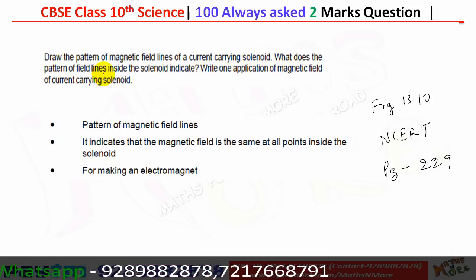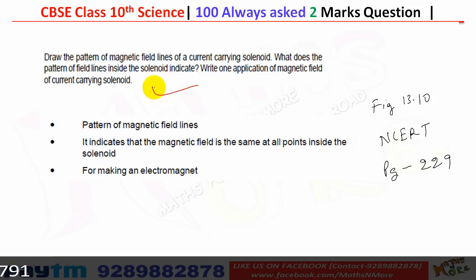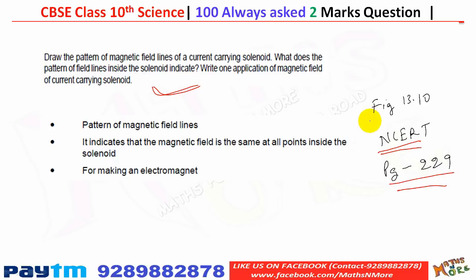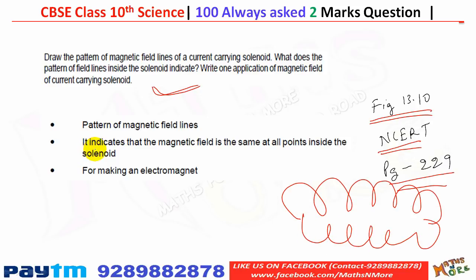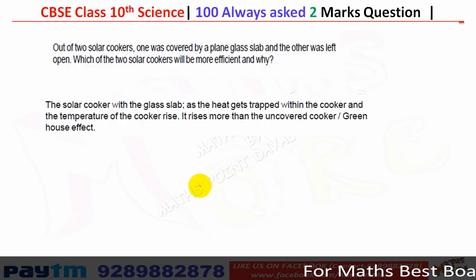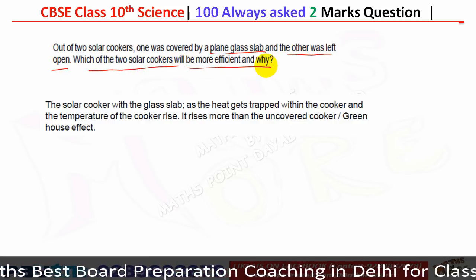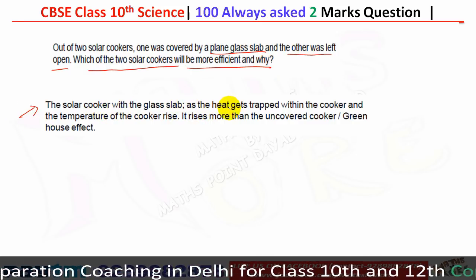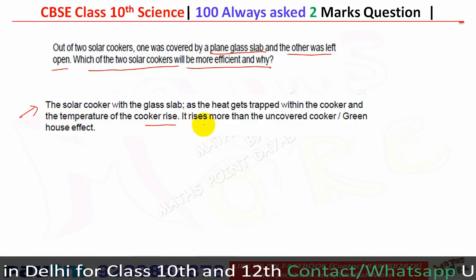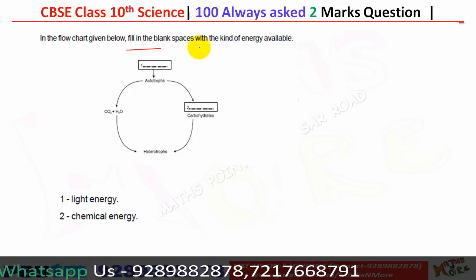For the pattern of magnetic field lines of a current-carrying solenoid, refer to NCERT page 229, figure 13.10. The field lines indicate that the magnetic field is the same at all points inside the solenoid. One application of a current-carrying solenoid is that it is used for making an electromagnet. The solar cooker covered with a glass slab is more efficient because heat gets trapped within it due to the greenhouse effect, raising the temperature higher than an uncovered cooker.